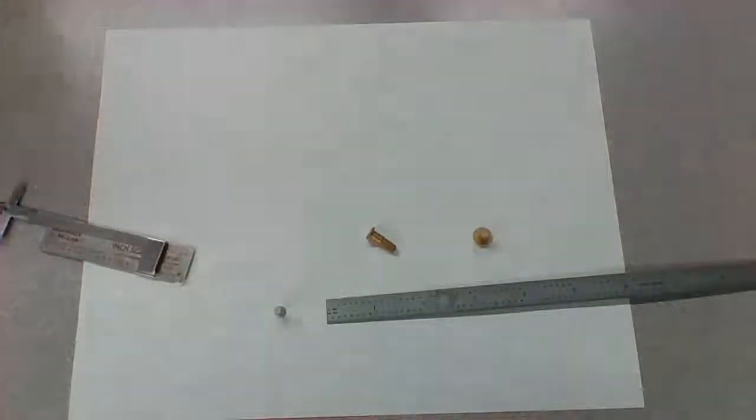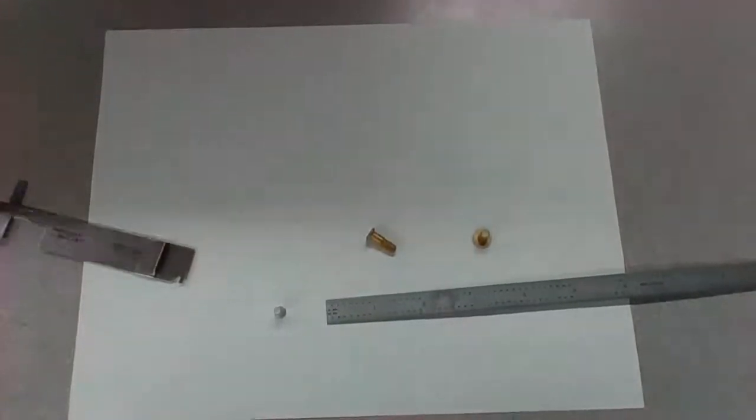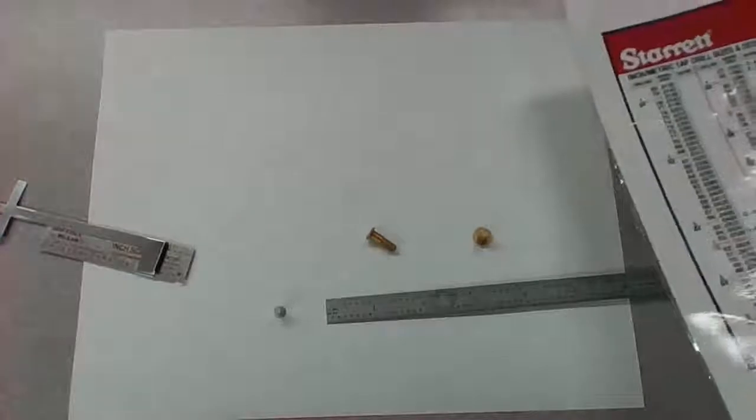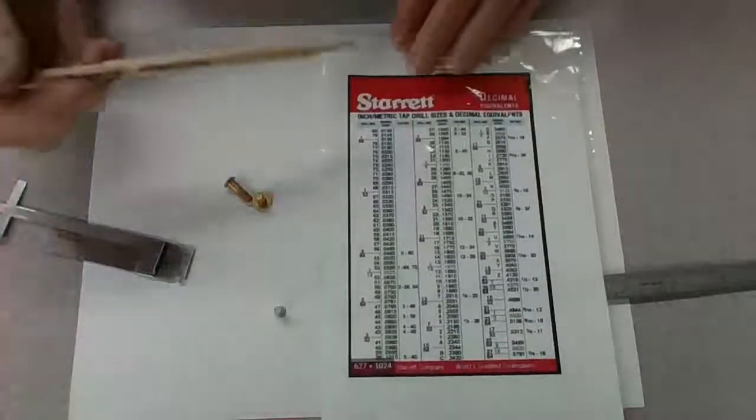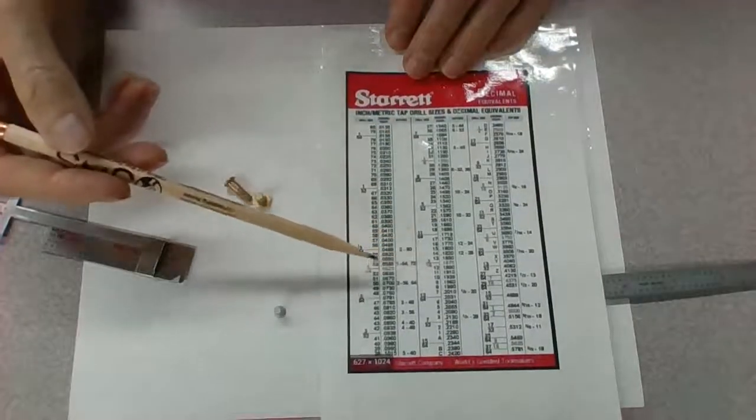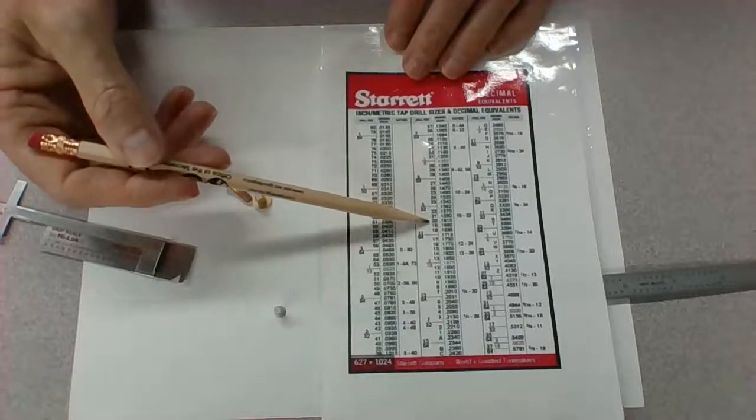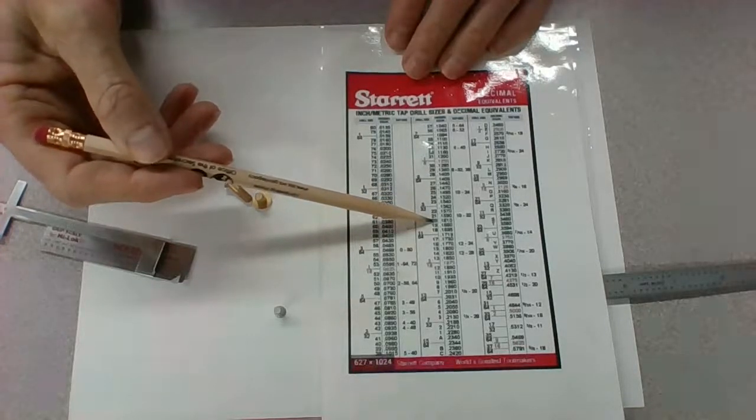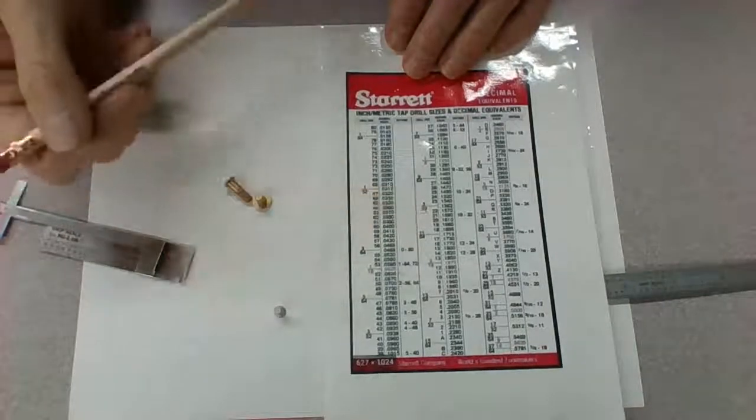I got my rivet chart. Here we go. A 5 32nd. There's one 8. There's three. Here's a 5 32nd. So again, we'd be drilling a little bit bigger. That would take a number 20 drill bit to be able to install that rivet right there. So that's a 5.